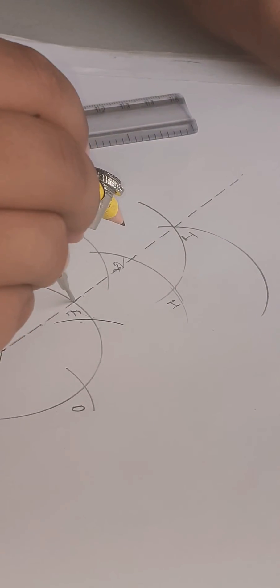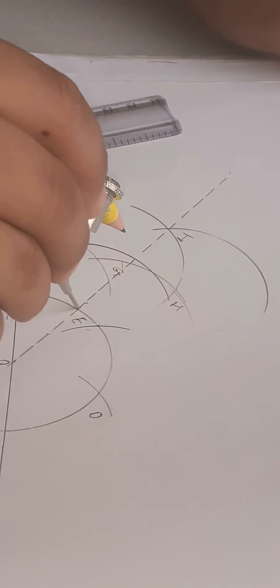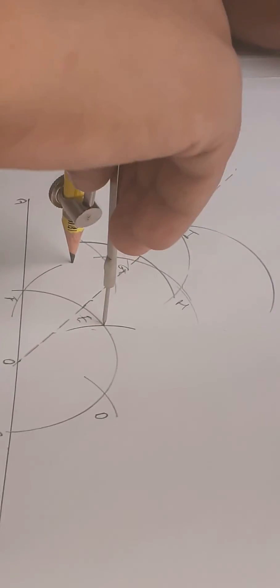Put your compass needle at the junction of I and cut an arc. Put your compass needle at E and cut an arc.